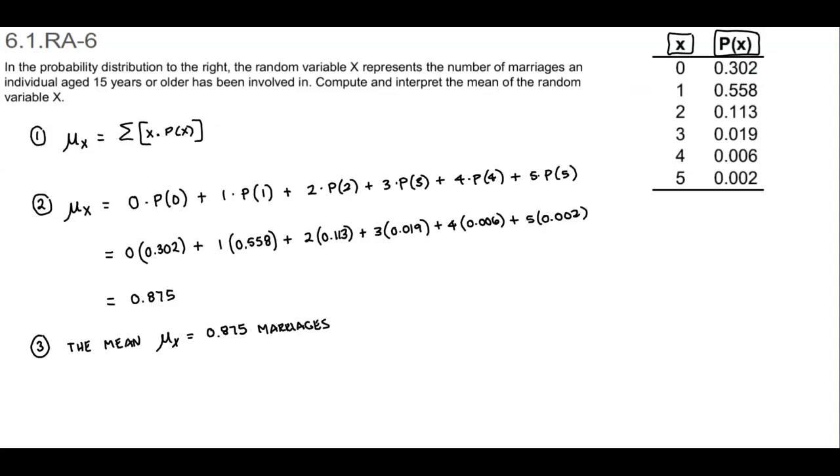The mean of a discrete variable can be thought of as the mean outcome of the probability experiment if the experiment were repeated many times. If many individuals aged 15 years or older were surveyed, then the sample mean number of marriages should be close to 0.875.